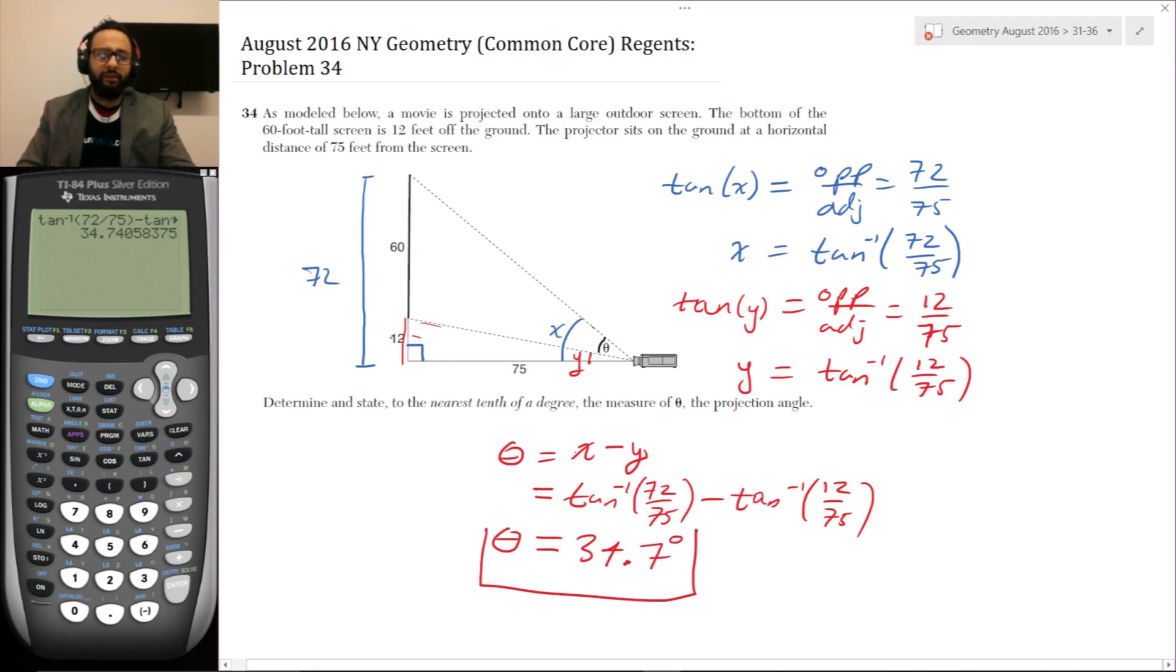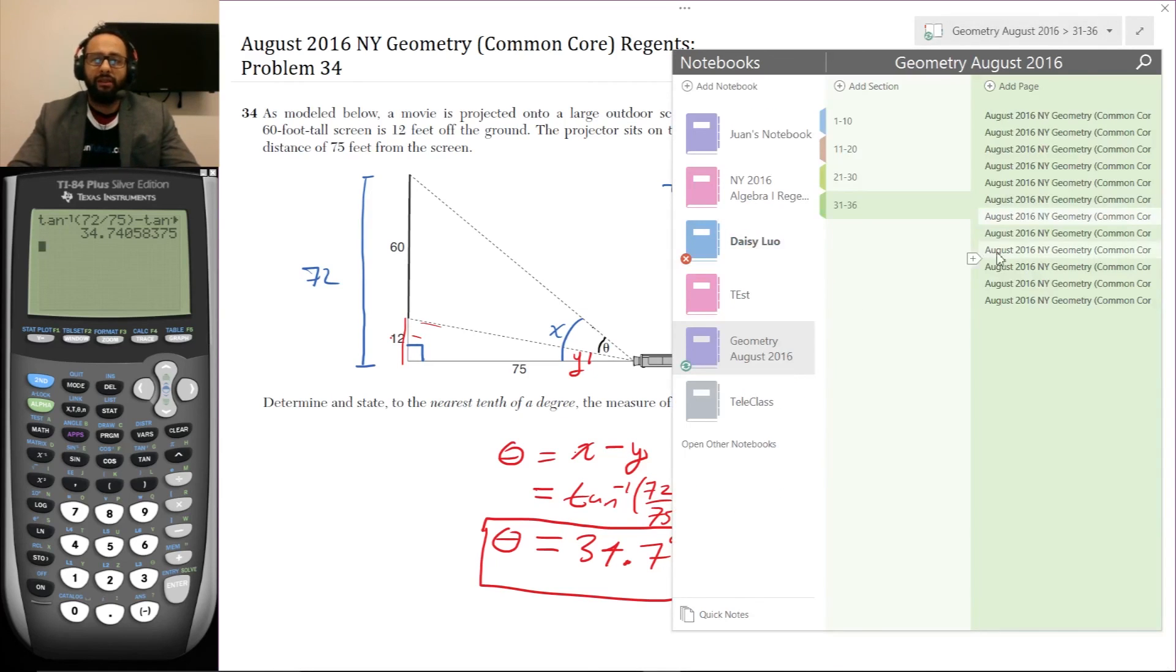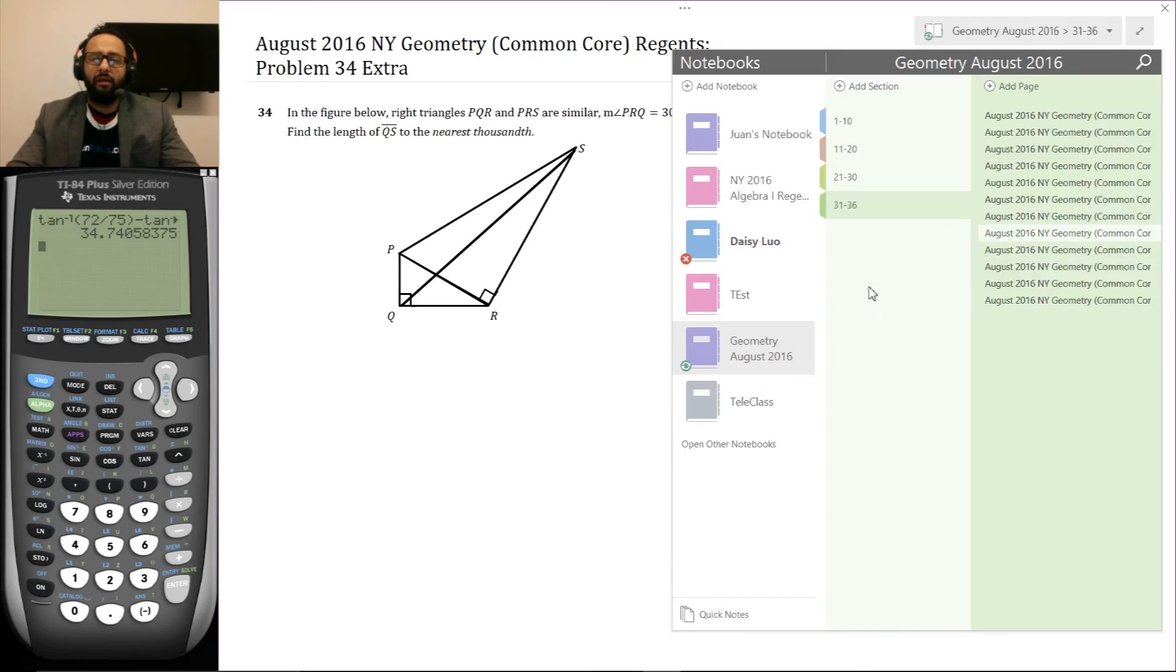That is the full answer. Now, what if I had rounded tan inverse of 72 over 75 and then rounded tan inverse 12 over 75 and then subtracted that? Sometimes you get unlucky and the rounding error happens to give you an incorrect rounding. So you want to be careful.